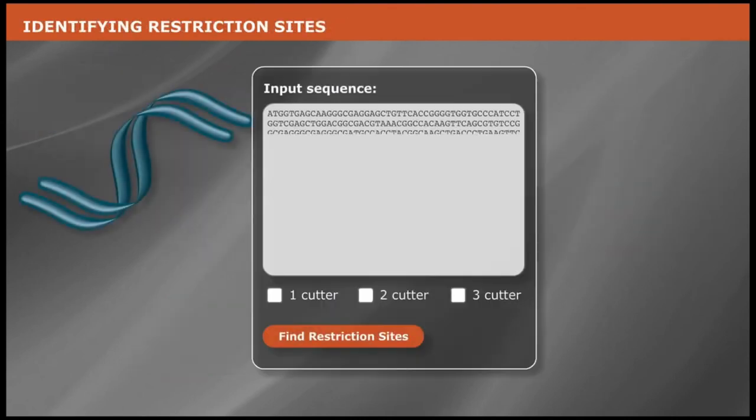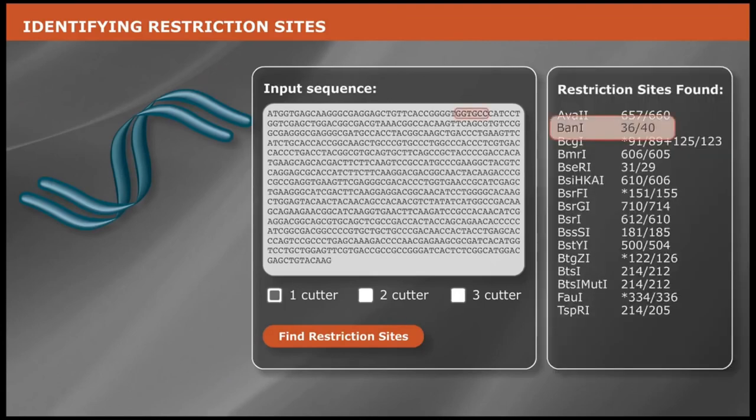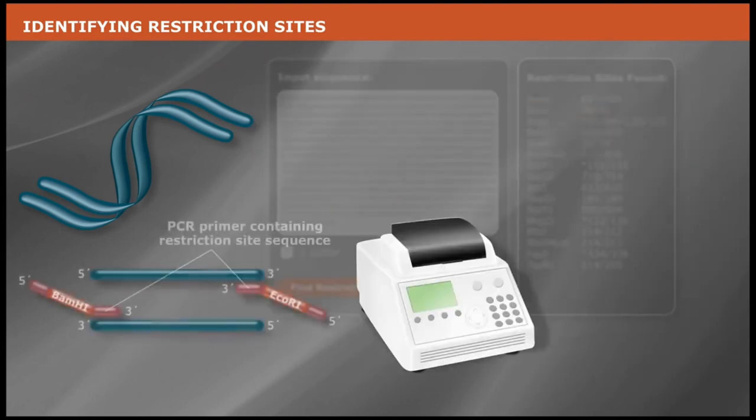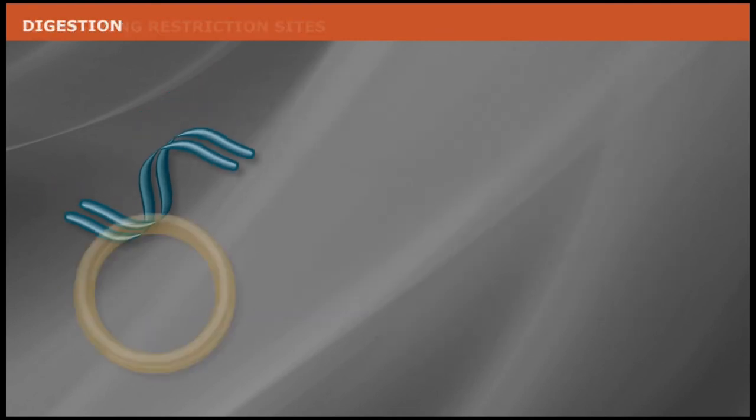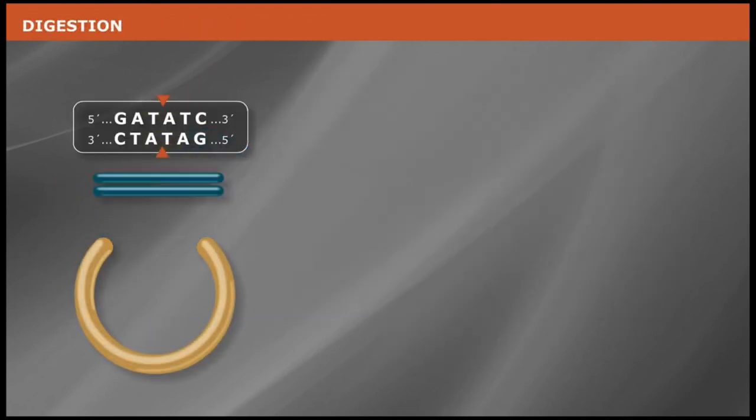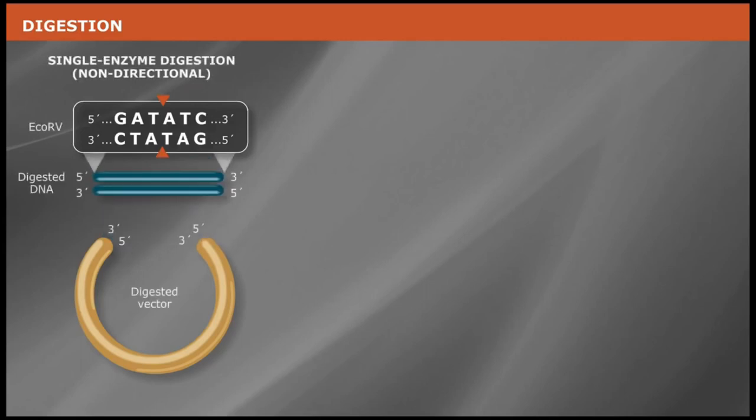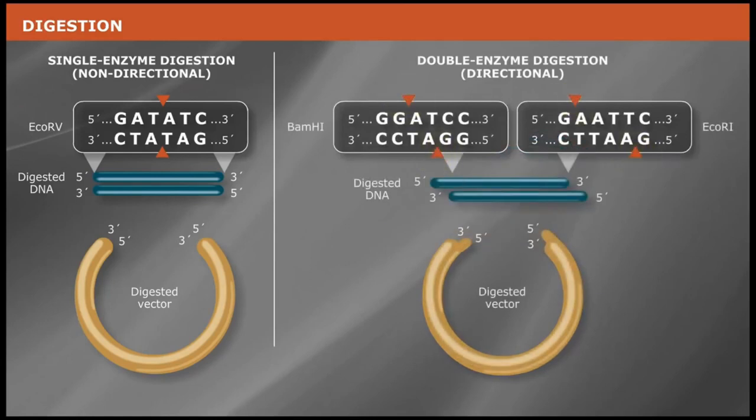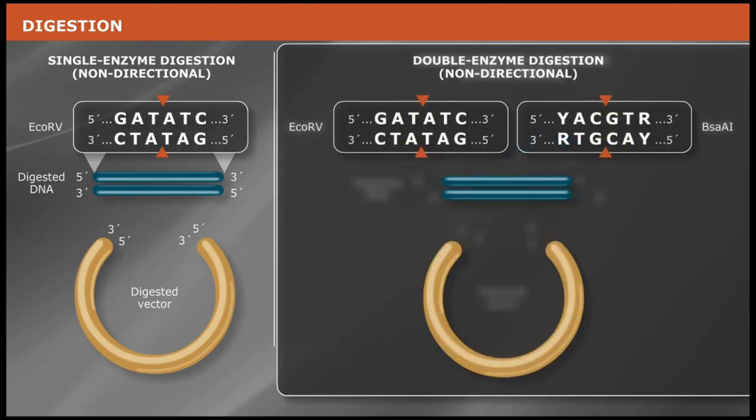The first step is to identify unique restriction sites in your source DNA that can be used to isolate the fragment of interest. In many cases, PCR can be used to add the necessary restriction sites to the gene of interest to facilitate directional cloning. Digest your vector and DNA fragment of interest with a single restriction enzyme for non-directional cloning, or a pair of restriction enzymes possessing different cleavage sites for directional cloning. Use of two different enzymes that produce blunt ends creates a non-directional cloning strategy.